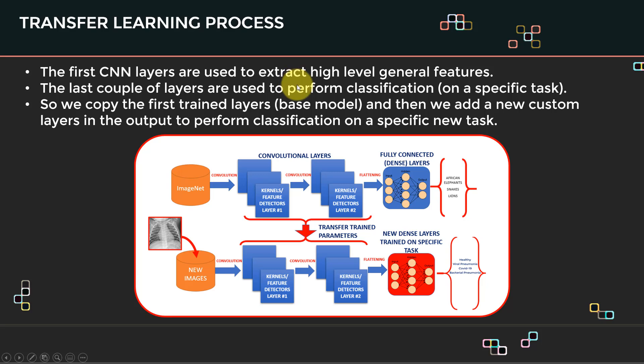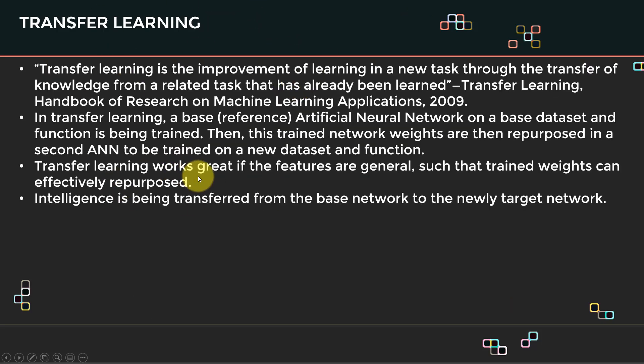So we only have one slide here that we essentially missed. It's more of additional details on transfer learning. So transfer learning is the improvement of learning in a new task through the transfer of knowledge from a related task that has already been learned before. And this is actually a great book known as Transfer Learning. And in transfer learning, what we did is that there was a base, or what we call a reference, artificial neural network that has already been pre-trained before. So we take it, and then we repurpose it somehow to perform a new task that is quite similar to the original one. And transfer learning works great if the features are general, such as the trained weights can effectively be repurposed, and intelligence being transferred from the base network to the newly target network.